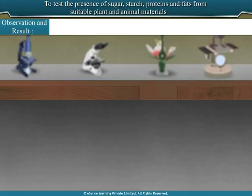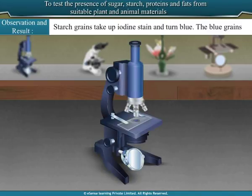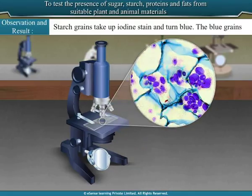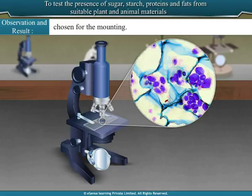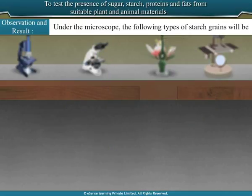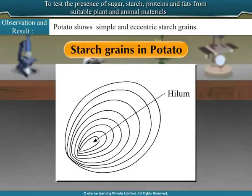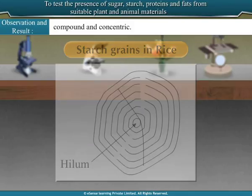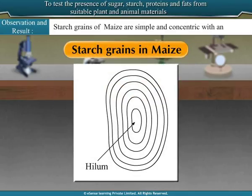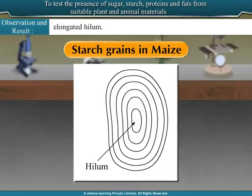Observation and result: Starch grains take up iodine stain and turn blue. The blue grains visible under the microscope indicate the presence of starch. The types of starch grains depend on the material chosen for mounting. Under the microscope: potato shows simple and eccentric starch grains; starch grains in rice are small, polygonal, either simple or compound, and concentric; starch grains of maize are simple and concentric with an elongated hilum.